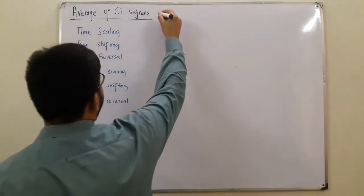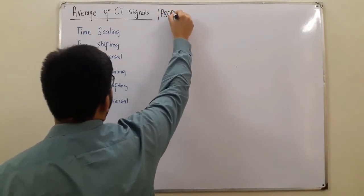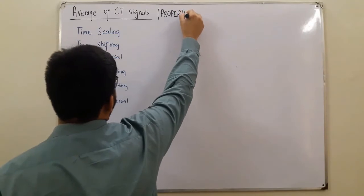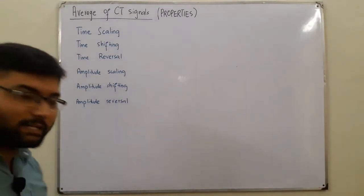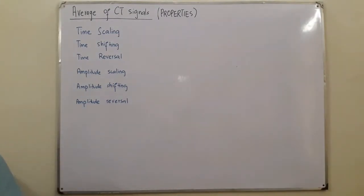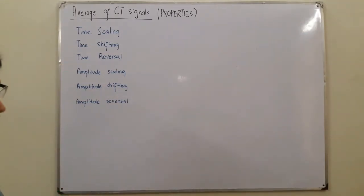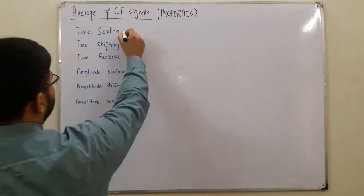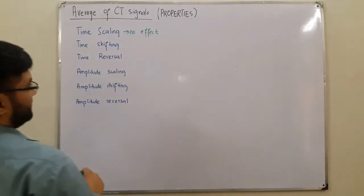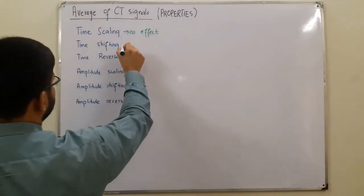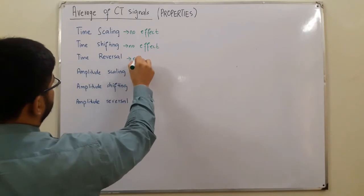Let me write the heading: Properties. The first is time transformation. If you time-scale a function, what would be the effect? Time scaling has no effect on the average value. Similarly, time shifting has no effect on the average value.